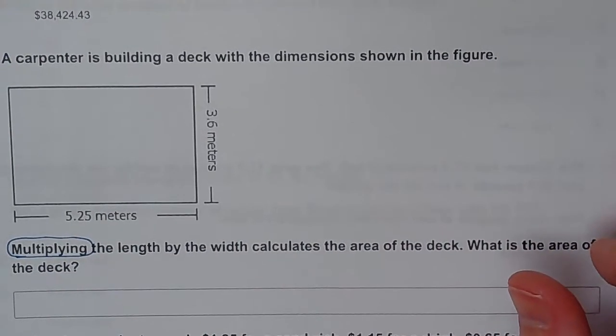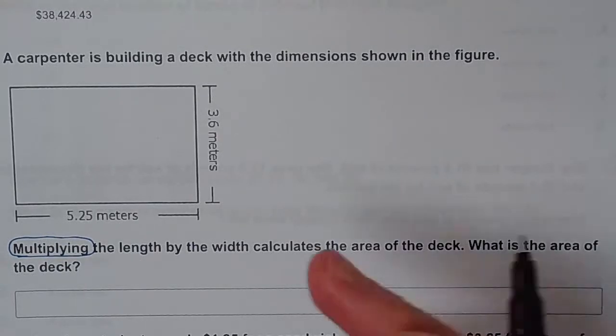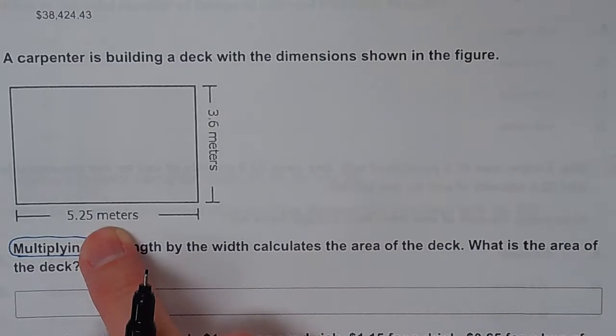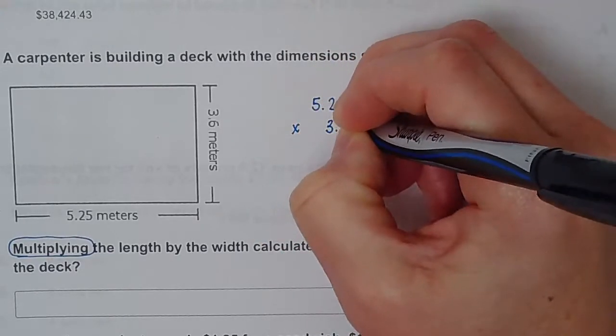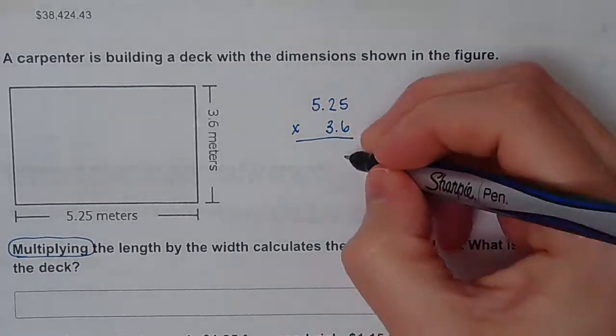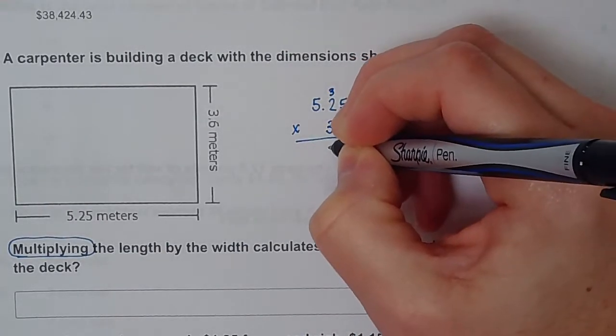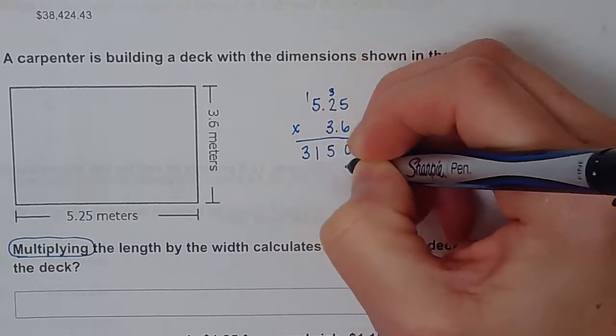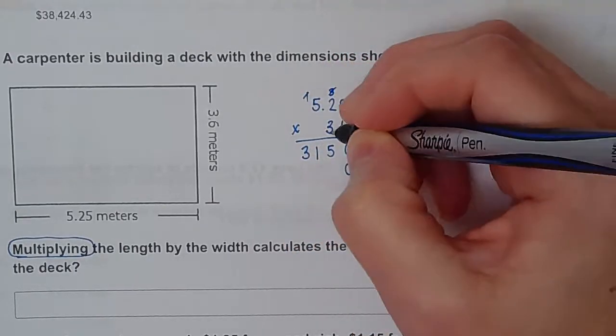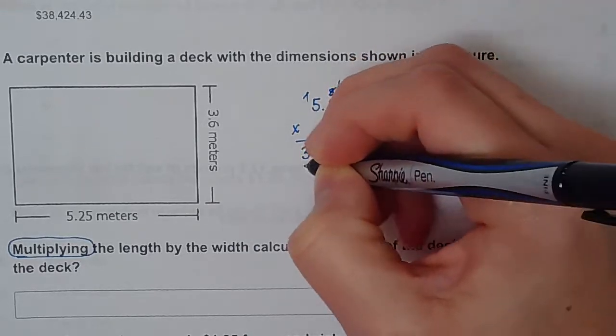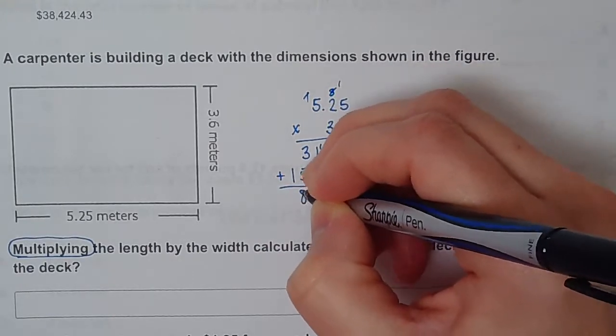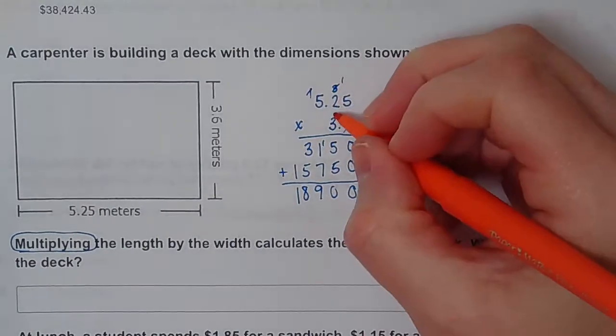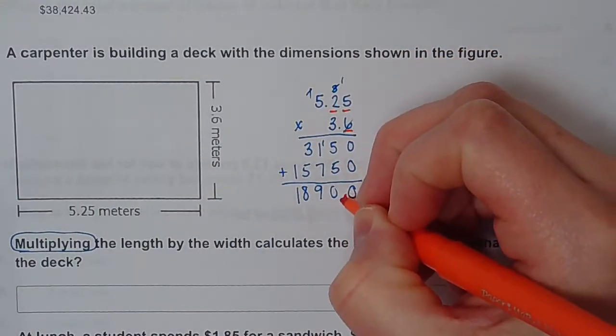This would also be one that is calculator inactive, so let's make sure you know how to do it by hand. The one with the most digits goes on top, so this one has three, this one has two. Remember you don't have to line up your decimals. Six times five is thirty, that's twelve, fifteen, thirty-one. Put my zero. That's fifteen, seven, fifteen. Add these up.